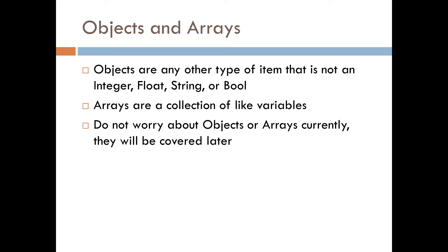Objects and arrays. Anything that's not one of those four primary types we just went over is considered an object. Arrays just denote a collection of like variables — you can have an integer array, a float array, a string array, a boolean array, and various types of object arrays such as an object reference array or an actor array. Don't worry too much about those currently — they will be covered in later lessons.